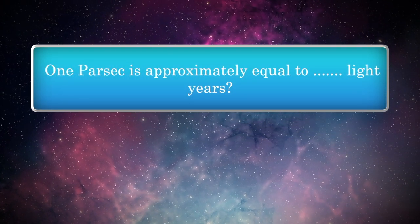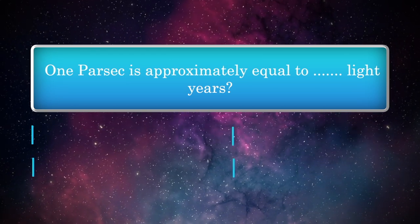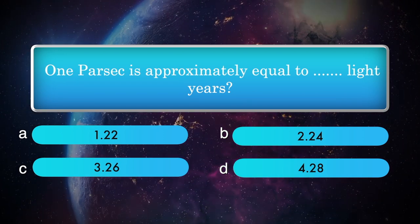One parsec is approximately equal to how many light years? Options: 1.2, 2.4, 3.6, 4.8.